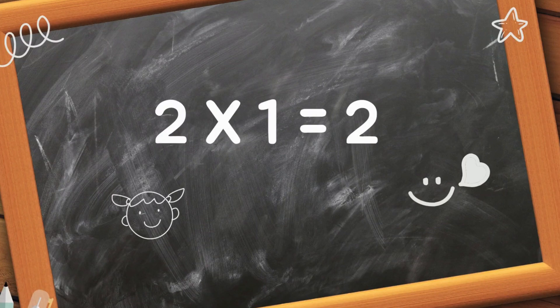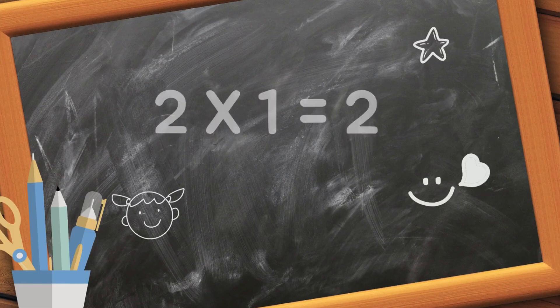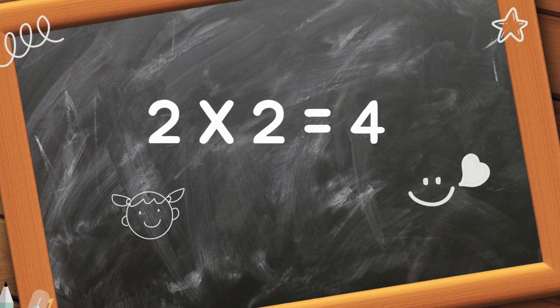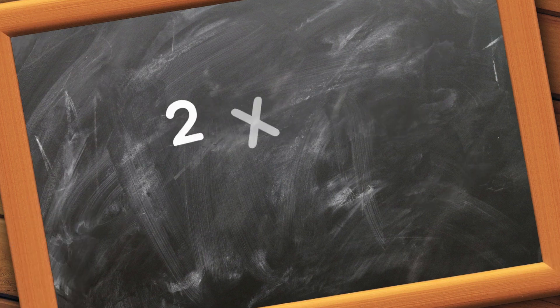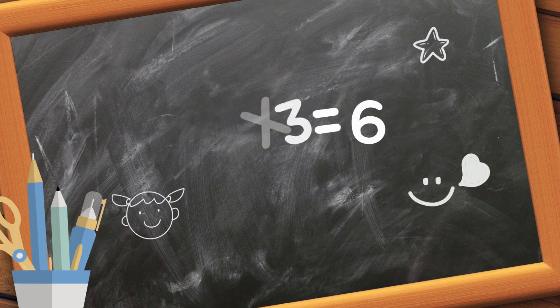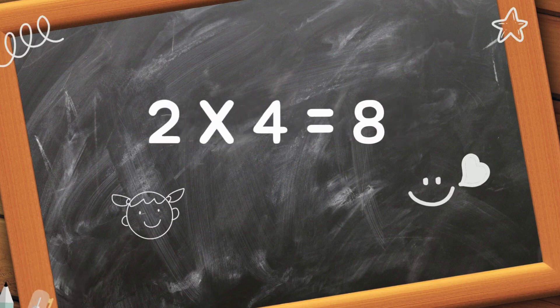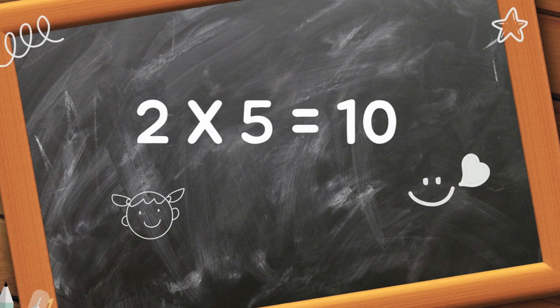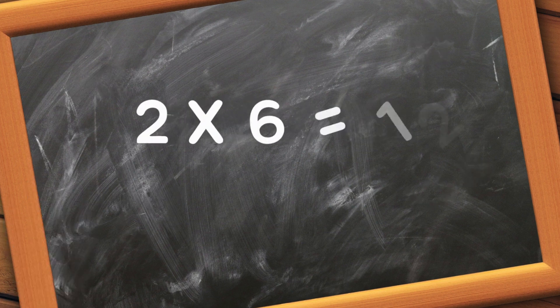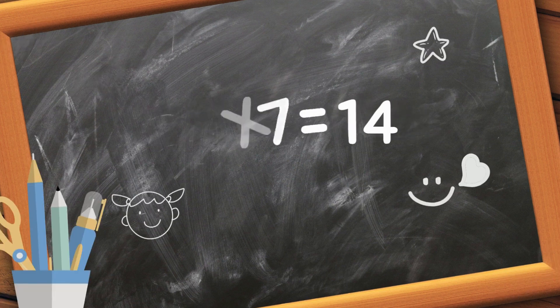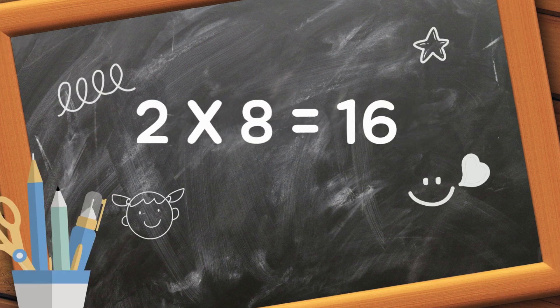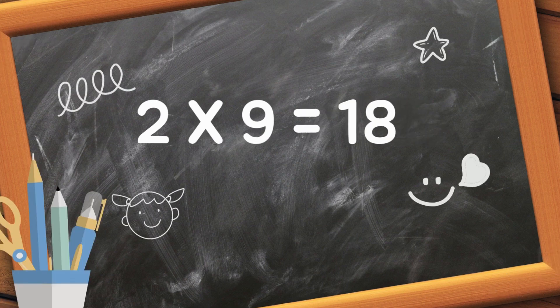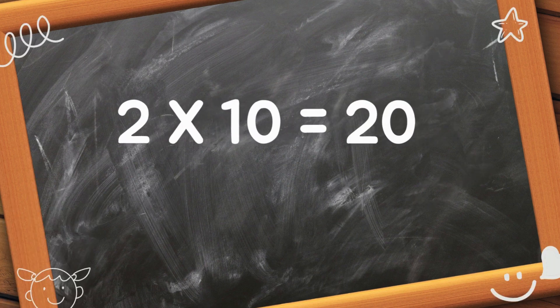2 1s are 2, 2 2s are 4, 2 3s are 6, 2 4s are 8, 2 5s are 10, 2 6s are 12, 2 7s are 14, 2 8s are 16, 2 9s are 18, 2 10s are 20.